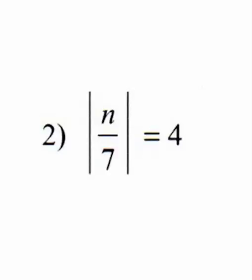This is one more absolute value problem, something similar to the previous one, but this one is a fraction. It's just your variable over 7. In this case, we have n — it could be x, it could be p, it could be any letter inside of here. But this is what we're going to try to solve.